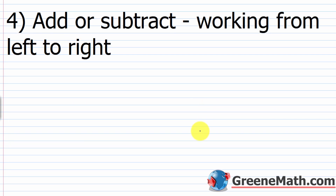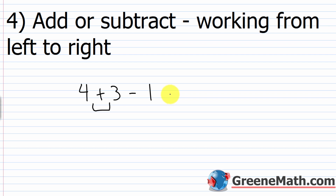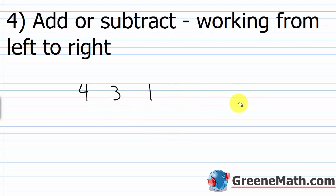Your fourth and lowest priority is addition and subtraction — add or subtract, again working from left to right. Addition and subtraction occur on the same level, just as we saw with multiplication and division. For example, 4 plus 3 minus 1: you add 4 plus 3 first to get 7, then subtract 1. If it were 4 minus 3 plus 1, you subtract first — 4 minus 3 is 1 — then 1 plus 1 is 2.